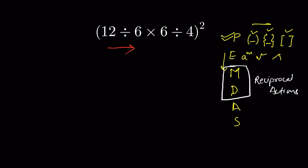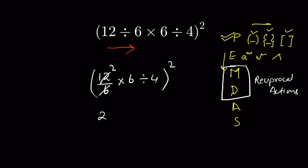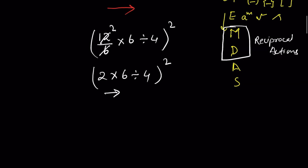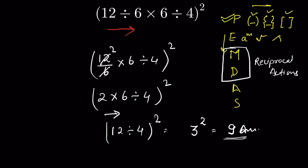So it will be 12 divided by 6, then times 6 divided by 4, whole squared. 12 divided by 6 is 2, so now it is 2 times 6 divided by 4, whole squared. From left to right we have multiplication next, so it will be 12 divided by 4, whole squared. 12 divided by 4 is 3, so it is 3 squared, which equals 9. That is the correct answer.